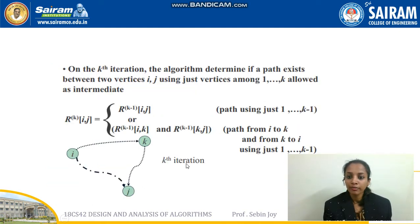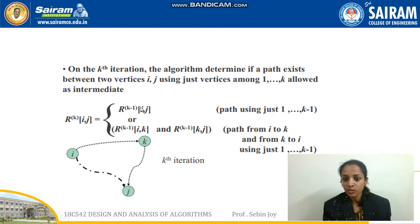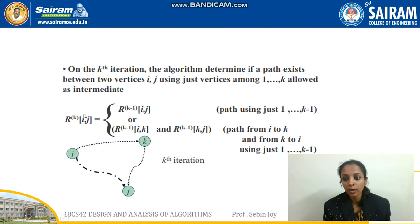On the k-th iteration, we check if a path exists between vertices i and j using intermediate vertices. The formula uses R, which represents the adjacency matrix. R^(k)[i][j] equals R^(k-1)[i][j] OR (R^(k-1)[i][k] AND R^(k-1)[k][j]). Here k is the intermediate vertex — meaning if there is a path from i to j directly, or a path from i to k and k to j, then R[i][j] equals 1.